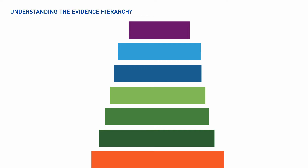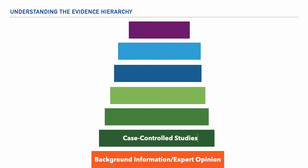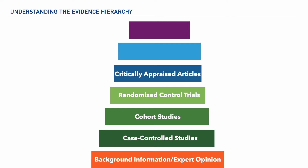Let's begin by identifying the seven levels of evidence. Towards the bottom of the hierarchy, we have background information and/or expert opinion. Just above this are case-controlled studies, and above this, cohort studies, and above that, randomized controlled trials. Then we have critically appraised articles and critically appraised topics. And at the top of the hierarchy, we have systematic reviews, which can also include something that we refer to as meta-analyses.